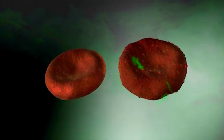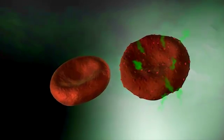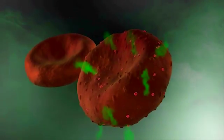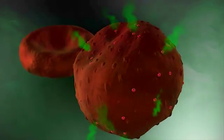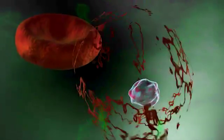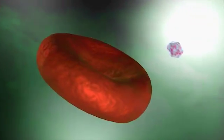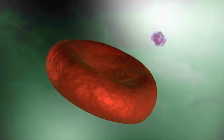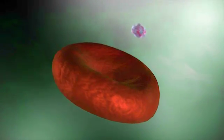When suspended in isotonic sorbitol, infected erythrocytes undergo swelling and osmotic lysis because sorbitol has a high PSAC permeability. Uninfected red cells lack PSAC activity and do not lyse in this solution.